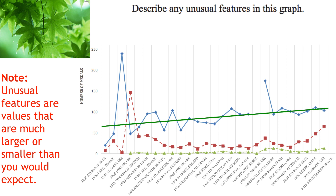So let's take our US data, put our trend line in there, and that gives us our basis to compare whether the values are a lot bigger or smaller than we expect. We can start off by identifying this large peak here, and if I follow that down, that is in 1904 in St. Louis, US. In that time period, the US got a lot more medals than we would have expected — it's a very large spike.